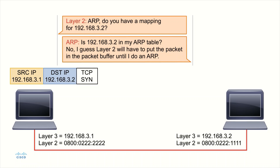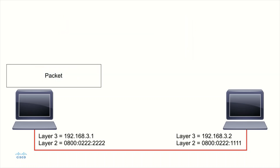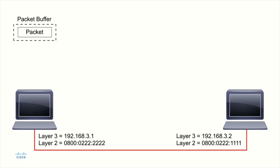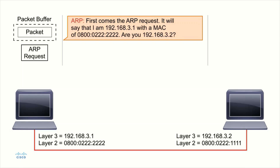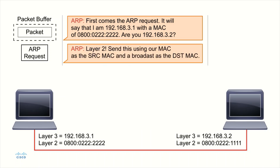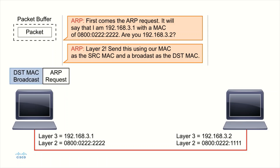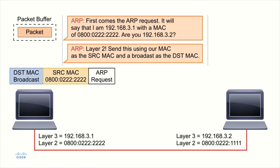So ARP goes to work and sends out a message. The packet we want to send is now sitting in the packet buffer. ARP creates an ARP request that says: hello, I am 192.168.3.1 and my MAC address is 0800.0222.2222 — are you 192.168.3.2? This is a broadcast, so it's sent out to everybody. Layer two sends this ARP message using our MAC address as the source and all Fs — the broadcast address — as the destination. The original TCP SYN packet sits in the packet buffer while we wait.